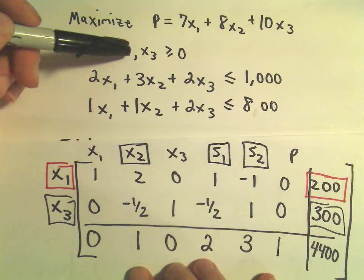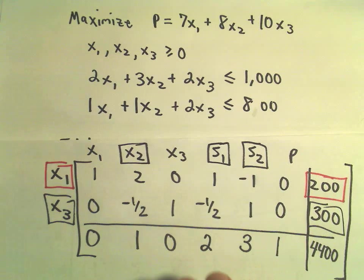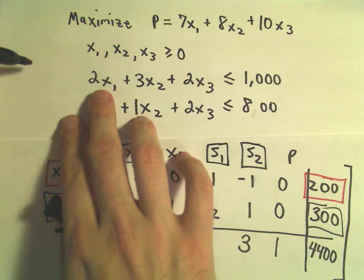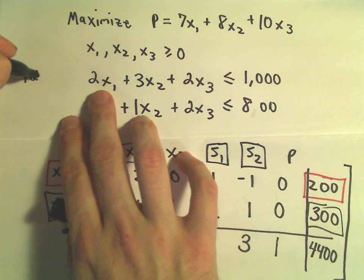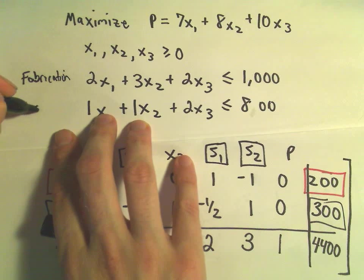Just to recall, remember the original problem. We were trying to maximize this function subject to these constraints. This first inequality had to do with fabrication time. The second inequality had to do with assembly time.